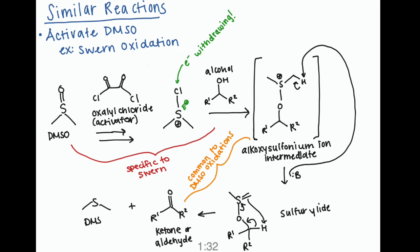The Kornblum oxidation was actually used as sort of a jumping off point for a number of different reactions where the activator is different. And basically what's similar among all of these activators is that they are improving the electrophilicity of the sulfur atom.